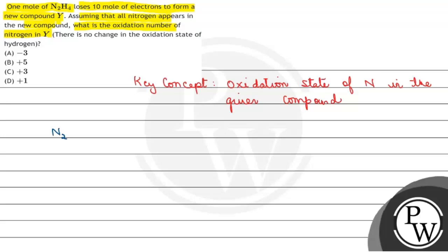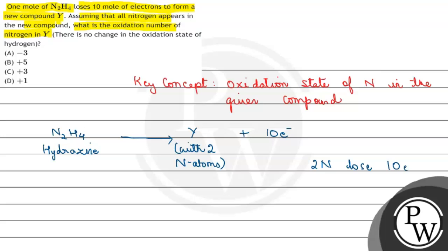So we have hydrazine N2H4, which loses 10 electrons to form a new compound Y. Since there are 2 nitrogen atoms in hydrazine, the 2 nitrogen atoms collectively lose 10 electrons, which means one nitrogen will lose 5 electrons.